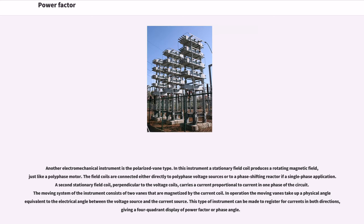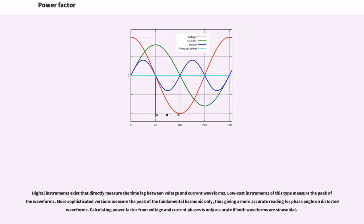Another electromechanical instrument is the polarized vane type. In this instrument a stationary field coil produces a rotating magnetic field, just like a polyphase motor. The field coils are connected either directly to polyphase voltage sources or to a phase-shifting reactor if a single-phase application. A second stationary field coil, perpendicular to the voltage coils, carries a current proportional to current in one phase of the circuit. The moving system consists of two vanes that are magnetized by the current coil. In operation, the moving vanes take up a physical angle equivalent to the electrical angle between the voltage source and the current source. This type of instrument can be made to register for currents in both directions, giving a four-quadrant display of power factor or phase angle. Digital instruments exist that directly measure the time lag between voltage and current waveforms. Low-cost instruments measure the peak of waveforms, while more sophisticated versions measure the peak of the fundamental harmonic, giving a more accurate reading for phase angle on distorted waveforms. Calculating power factor from voltage and current phases is only accurate if both waveforms are sinusoidal.